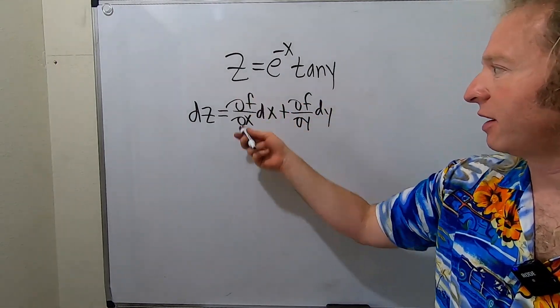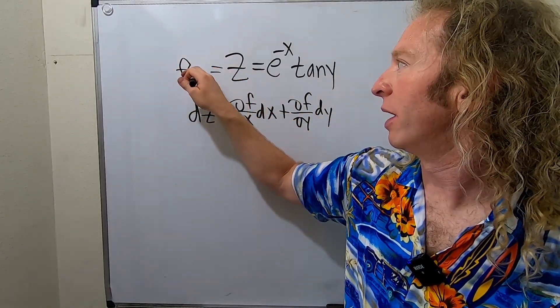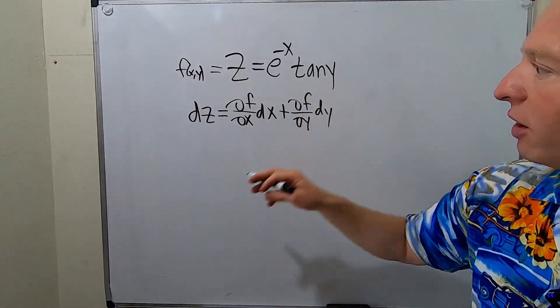So let's first work out ∂f/∂x. By the way, you can think of this as f, so z is equal to f(x,y). Same thing. So let's work out ∂f/∂x.